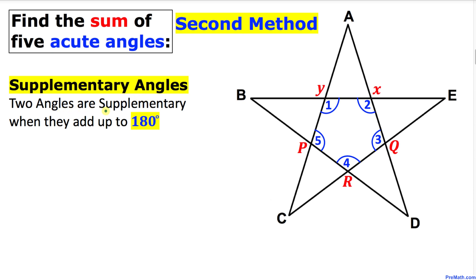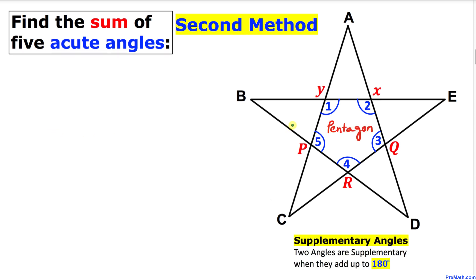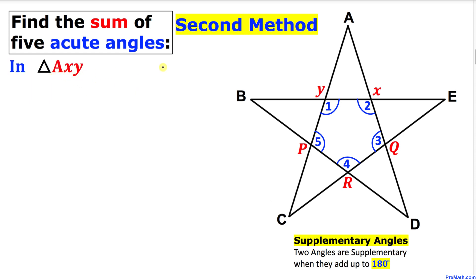Here's our second method. In this method we will be using the supplementary angles concept — two angles are supplementary when they add up to 180 degrees. Let me go over this star shape once again. A, B, C, D, and E are our corner vertices, and X, Y, P, Q, and R are the vertices of the inner pentagon. Angles one, two, three, four, and five are the interior angles of this pentagon.